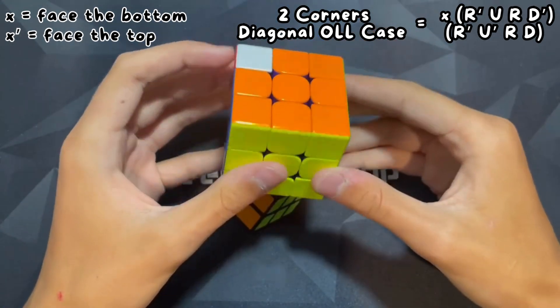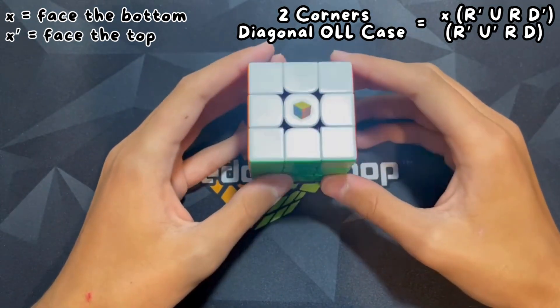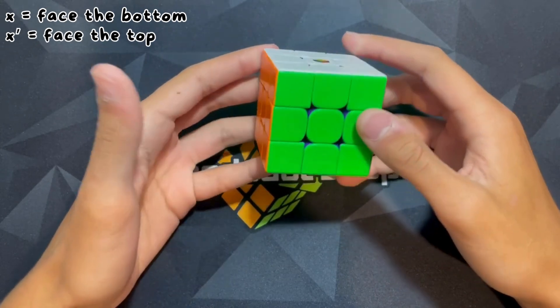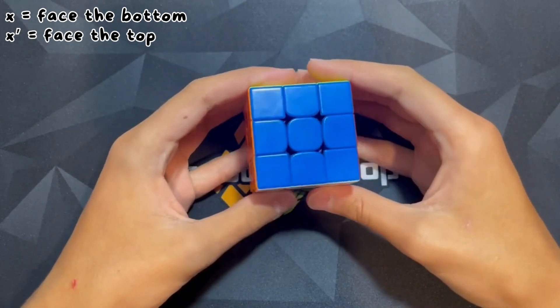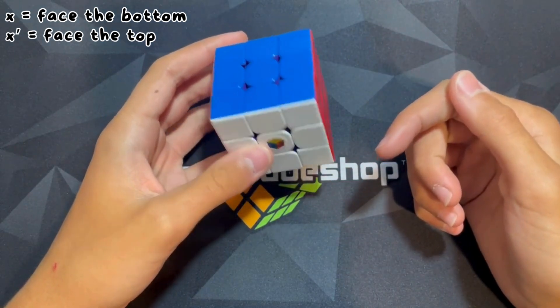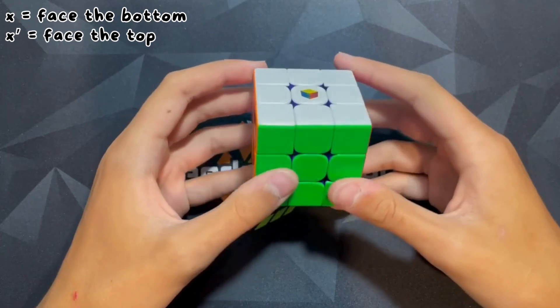Then X prime, it's very similar, you just face the top. It's like the opposite, so that's lowercase X with the apostrophe there. So that just means you face the top.